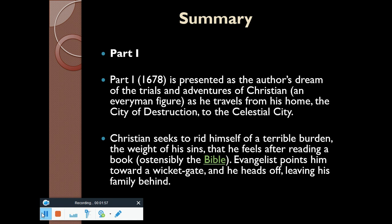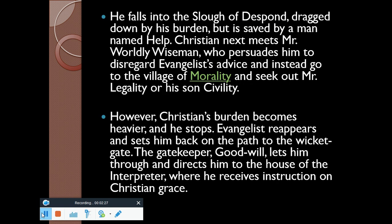Part One is presented as the author's dream of the trials and adventures of a man named Christian as he travels from his home, the City of Destruction, to the Celestial City. Christian seeks to rid himself of a terrible burden — the weight of his sins — that he feels after reading a book, ostensibly the Bible. When the Evangelist points him toward the Wicket Gate, he heads off leaving his family behind.